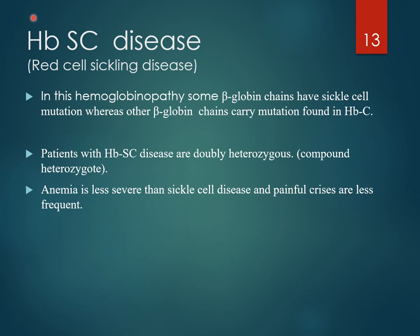Hemoglobin SC disease, also known as red cell sickling disease, is a hemoglobinopathy in which some beta-globin chains carry the sickle cell mutation while others carry the hemoglobin C mutation. These individuals are compound heterozygous. Anemia is less severe than in sickle cell disease and painful crises are less frequent. The outcome is better than sickle cell disease but poorer than hemoglobin C disease.